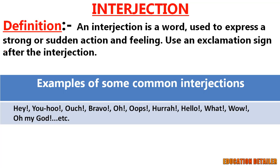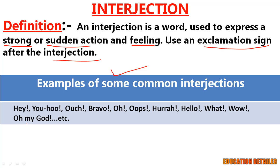An interjection is a word used to express a strong or sudden action and feeling. Remember to use an exclamation sign after the interjection. Simply put, interjections show emotions, feelings, or a sudden mood. Here I have given a table where you can see some common interjections which we use most of the time.